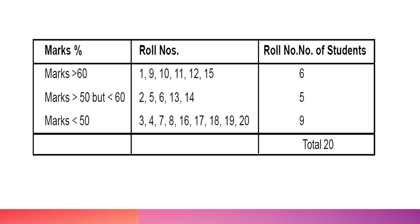Now you can see this image. You can answer quickly how many students have got 60% and more, and how many students have got 50% and less. You can easily tell us that 6 students have got 60% of the marks and 9 students have got 50% of the marks.